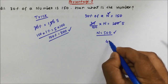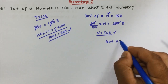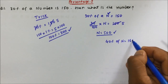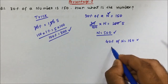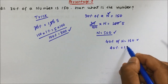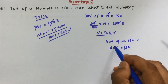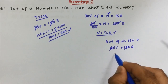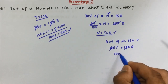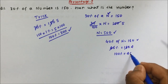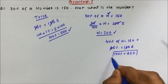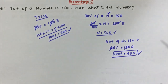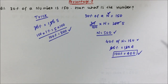They can also ask: if 40 percent of a number is 160, find the number. So 40% = 160. Divide 160 by 40 — that gives 4, so 1 percent equals 4. Multiply both sides by 100: 100 percent equals 400. So the number is 400.